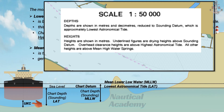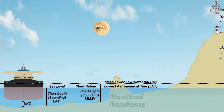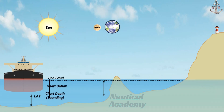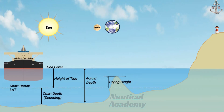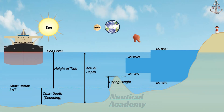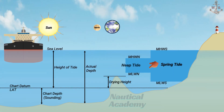This is why using lowest astronomical tide as the chart datum provides a more conservative safety margin for navigation — it represents a worst case scenario, helping mariners avoid running aground when tides are at their lowest. While the Moon's gravitational pull is the primary force behind tides, the Sun also plays a significant role. The height of the tide depends on the combined gravitational effects of both the Moon and the Sun on the Earth, and as their relative positions change during the lunar cycle, the tidal range varies — giving rise to what we call spring tides and neap tides.